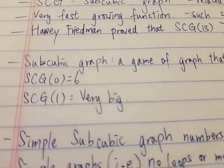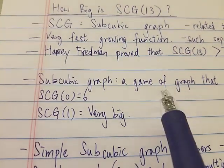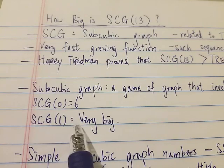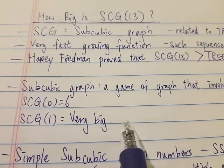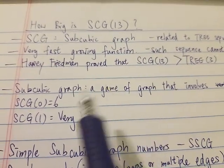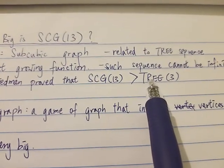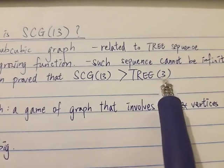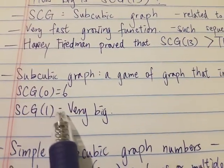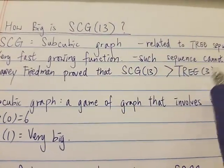SCG(0) is equal to 6 — nothing too special there. But then SCG(1) outputs a very, very big number. We already don't know how big it is. The TREE sequence is a very fast-growing sequence, but SCG is even crazier than the TREE sequence.